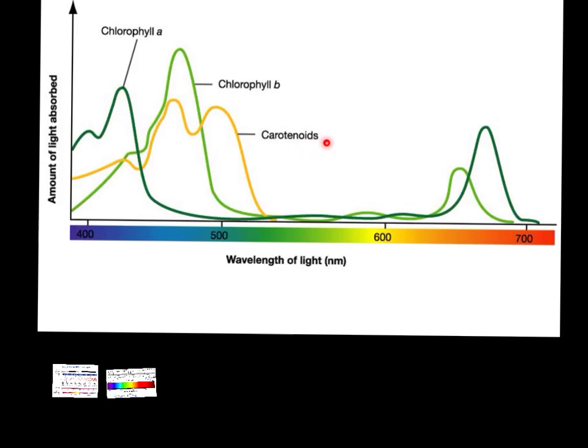But even with the carotenoids, you can see it kind of tapers off around the green area. So here we're seeing this is why plants are green because nothing absorbs the green portion of the light spectrum. At least not significantly. So most of that green light is reflected back.